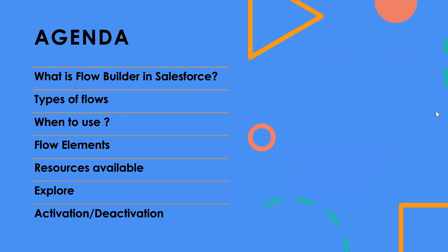Let's look at the agenda for this session. We'll start by understanding what a Flow Builder is in Salesforce, then what are the types of flows, when and why to use a Flow Builder, the flow elements available, what resources can be created, how to navigate to Flow Builder in a Salesforce developer org, and finally activation and deactivation of Flow Builders.